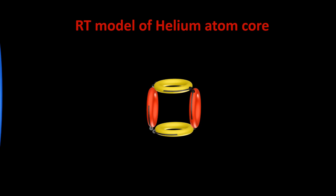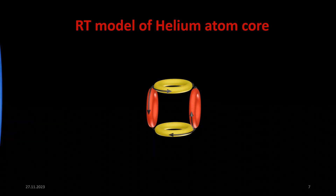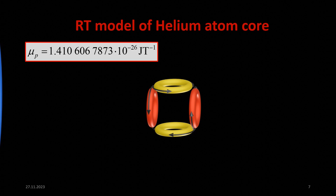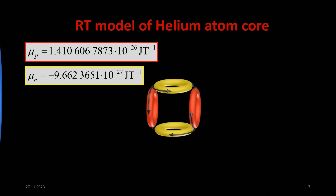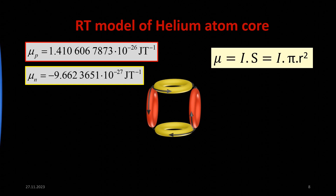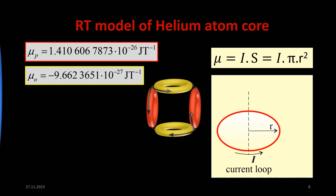Why does ring theory use a ring for the proton and neutron model? In 1952, the magnetic moments of the proton and neutron were experimentally proven and very precisely measured. We know from physics that the magnetic moment of a planar conductive loop with a surface area s, flowing through a constant electric current i, is equal to the product of current and surface and is oriented in the direction of the normal of the surface according to Ampere's right-hand rule.